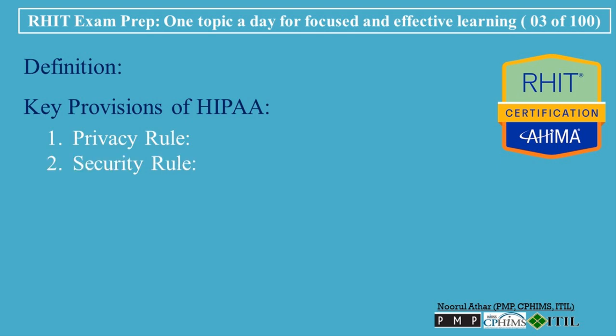2. Security Rule: The Security Rule sets standards for the protection of electronic protected health information, ePHI. It requires covered entities to implement administrative, physical, and technical safeguards to ensure the confidentiality, integrity, and availability of ePHI. This includes measures such as access controls, encryption, secure storage, and regular audits to protect sensitive data from breaches.